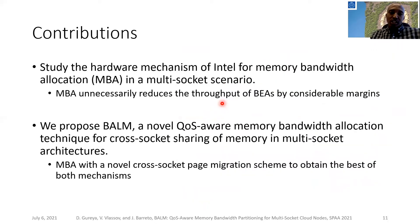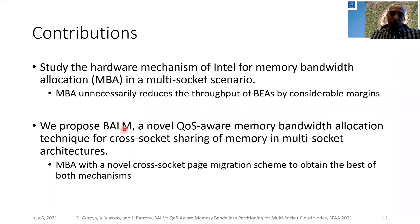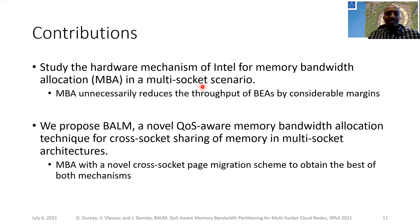Our contributions are twofold. As a first contribution, we studied Intel's hardware mechanism for memory bandwidth allocation in multi-socket scenarios and showed that MBA unnecessarily reduces best-effort throughput by considerable margins. As the main contribution, we propose BALM, a novel QoS-aware memory bandwidth allocation technique for cross-socket memory sharing in multi-socket architectures. The key insight of BALM is to combine MBA with a novel cross-socket page migration scheme to obtain the best of both worlds.